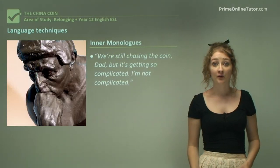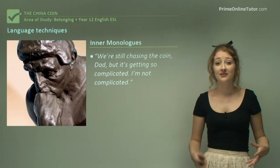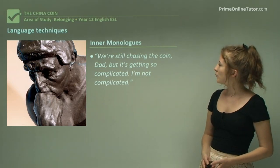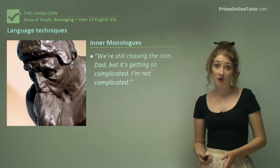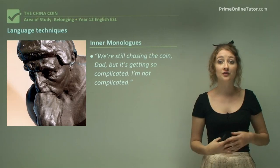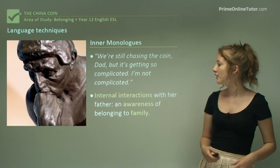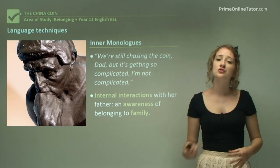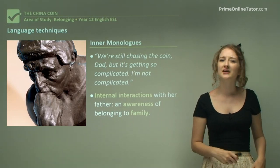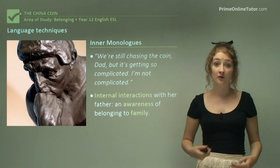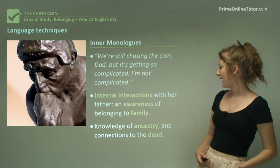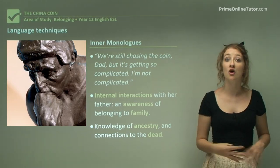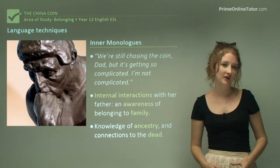Looking at inner monologue, we can trace this throughout the work. We get the sense that Leah shares a connection with her dad through thinking to herself and addressing him in her mind. She states: 'We're still chasing the coin, Dad, but it's getting so complicated. I'm not complicated.' Within her own mind she has an inner monologue, expressing her views by addressing her father. These internal interactions show an awareness of belonging to family, and you really get that sense of a very strong bond — even though he's dead, she's still speaking to him. This also reflects the Chinese cultural importance of ancestry and connections to the dead.